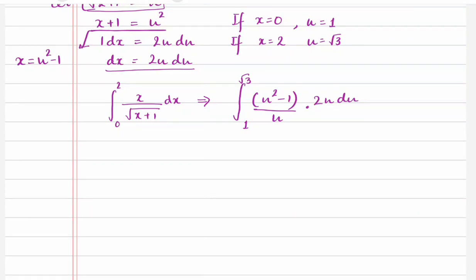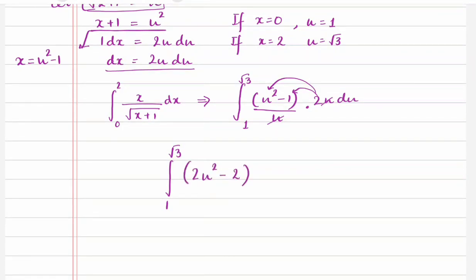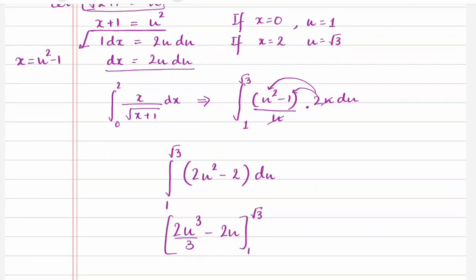Now we just need to integrate. Let's simplify a little bit — u divided by u is 1, so that cancels. The integration becomes from 1 to root 3 of (2u squared minus 2) du. Integrating that gives us 2u cubed over 3 minus 2u, evaluated from 1 to root 3.